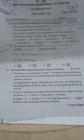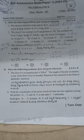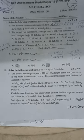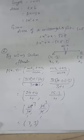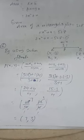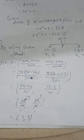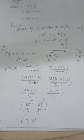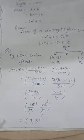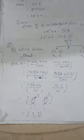Find the coordinates of the point which divides the line segment joining (4, −3) and (8, 5) in the ratio 3:1. Using the section formula: (mx₂ + nx₁)/(m + n), (my₂ + ny₁)/(m + n), the answer is (7, 3).